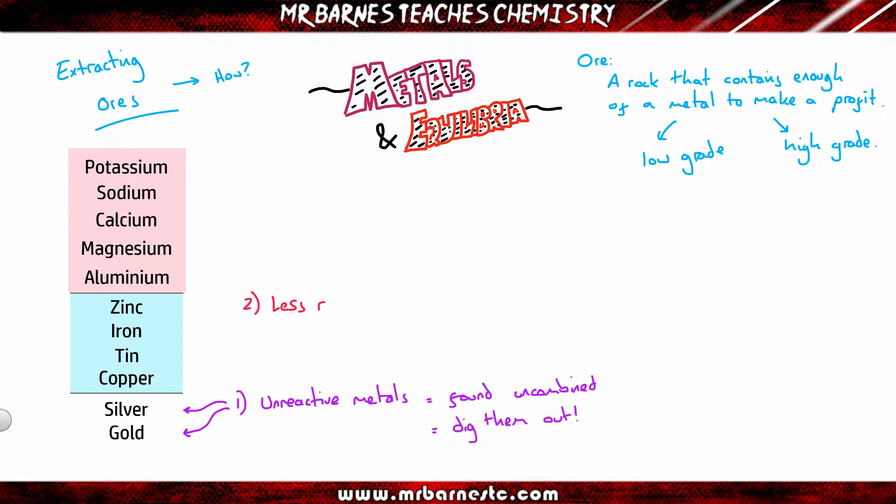The ones that are less reactive than carbon, so that's zinc, iron, tin, and copper, have to be reduced or heated with carbon. It's a displacement reaction. You add carbon in, you heat it, and your carbon will react with the oxygen in the ore, leaving you with your metal on its own. The benefit of that is it's cheaper than the third way of extracting them, which is electrolysis, which I'll come on to in a minute. For example, if you take copper oxide, you react it with carbon, it will make copper and carbon dioxide, leaving you with your copper metal.